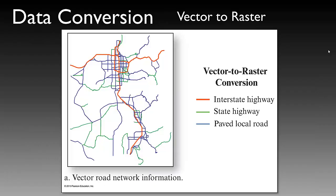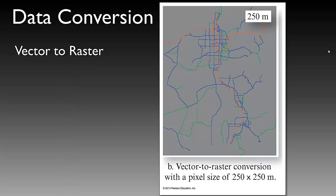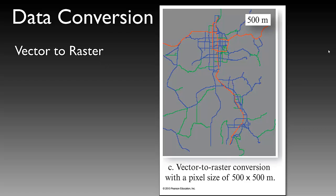Each one of these pixel resolutions has some value, but possibly not at the scale of this image. Once we reach the 250 meter pixel resolution, we lost all definition of the ground detail. When you are conducting data conversion, especially vector to raster, you have to remember that you are going to lose the explicit edge of a vector data set. As shown in the example from the Jensen and Jensen book, we have a vector to raster conversion of interstate, state, and paved local roads along the Wasatch Front in Utah. Taking that vector road network and rasterizing it to a 250 meter pixel resolution, you can start to see that we lose definition and no longer have a true width of the road. Taking the data set to a 500 meter pixel resolution, you can see how we lose detail and now have a coarse representation of our road network.